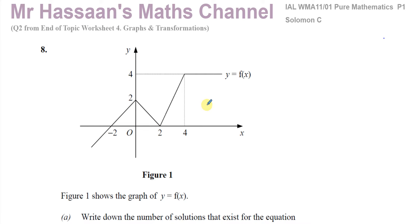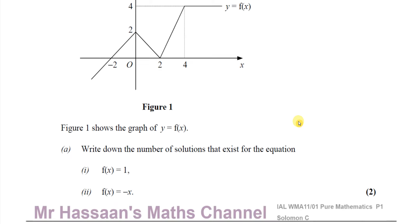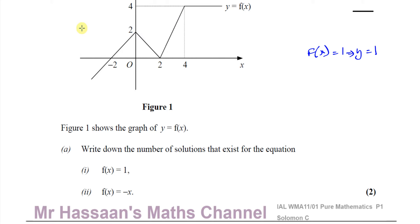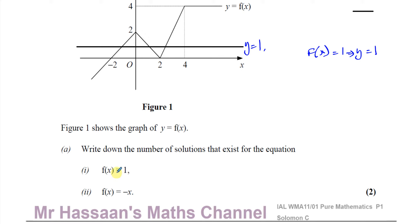The first part says: write down the number of solutions that exist for the equation f(x) equals 1. Now f(x) equals 1 is the same as the line y equals 1, which is a horizontal line passing through 1. So we draw the line y equals 1, and we want to know when f(x) is equal to 1 — the 1 has replaced the y.